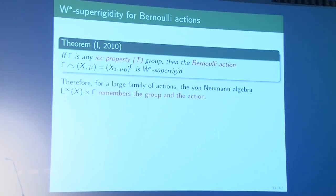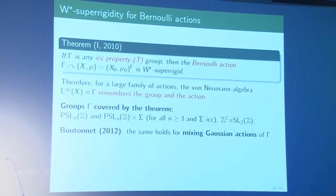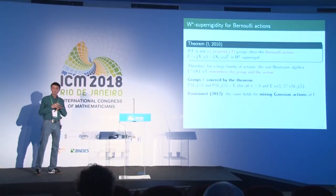Concrete examples to which the theorem applies include PSLₙ(ℤ) with property T for n ≥ 3, as well as groups with an infinite normal subgroup with relative property T — such as PSLₙ(ℤ) × σ for any ICC group σ, and the semi-direct product ℤ² ⋊ SL₂(ℤ). Boutonnet later obtained a generalization to all mixing Gaussian actions. These results show that for a large class of non-amenable (property T) groups, there exist actions satisfying the most extreme form of rigidity.